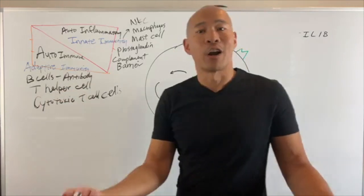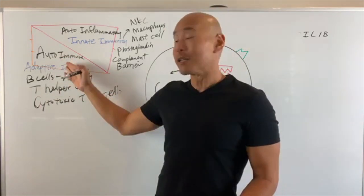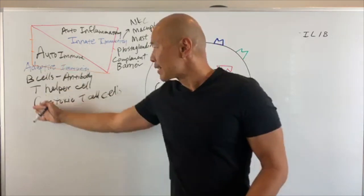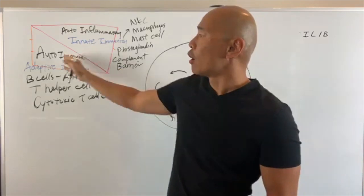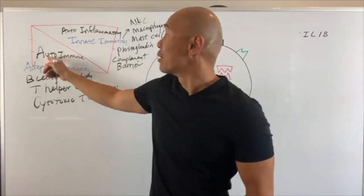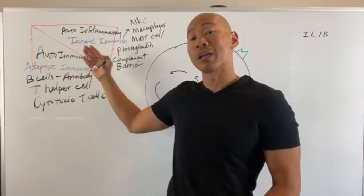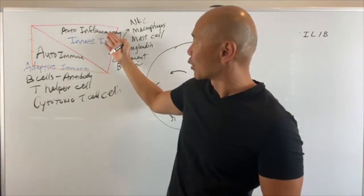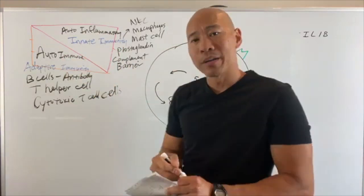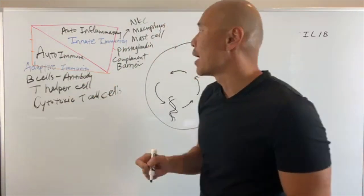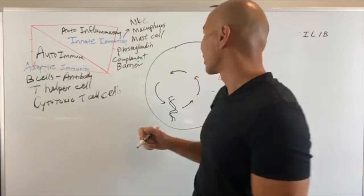Autoimmune disease is what most of our audience is searching answers for. But the reason we show this diagram this way is that all autoimmune disease has a component of auto-inflammatory disease, and all auto-inflammatory components have a component of autoimmune disease — they're related. We talked previously about how inflammation and autoimmune disease trigger each other; we call it co-activation.